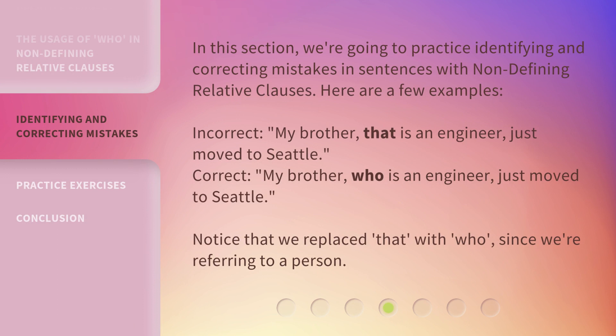In this section, we're going to practice identifying and correcting mistakes in sentences with non-defining relative clauses. Here are a few examples. Incorrect: 'My brother, that is an engineer, just moved to Seattle.' Correct: 'My brother, who is an engineer, just moved to Seattle.' Notice that we replaced 'that' with 'who,' since we're referring to a person.